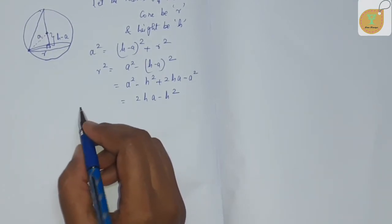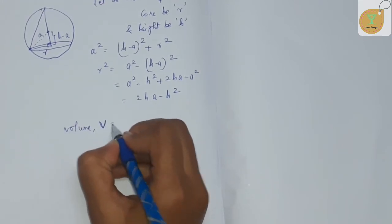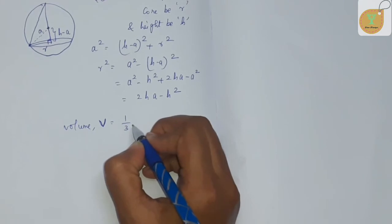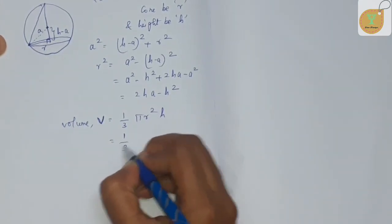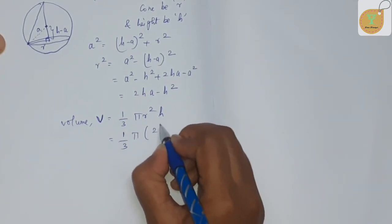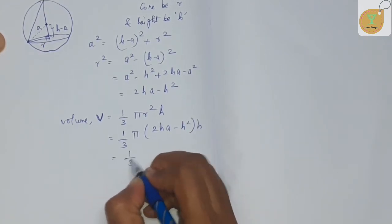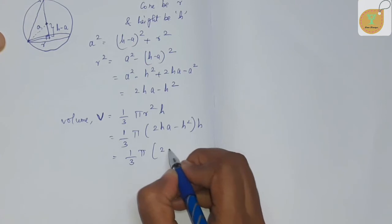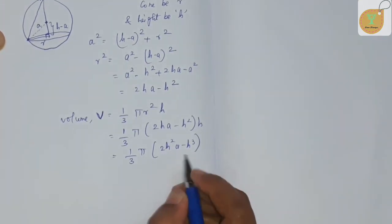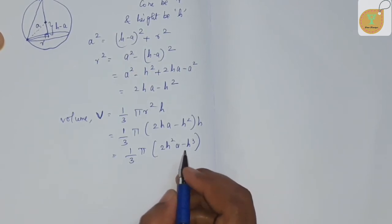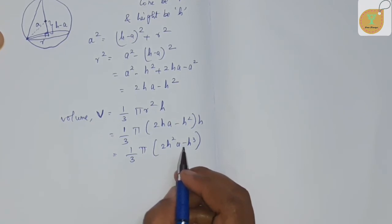We need to find the volume of the right circular cone, which is V = (1/3)πR²H. Substituting R² = 2Ha - H², we get V = (1/3)π(2Ha - H²)H = (1/3)π(2H²a - H³). We need to find the height where the volume is maximum.